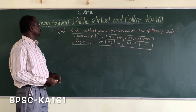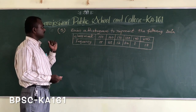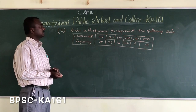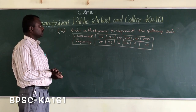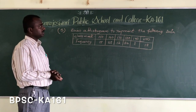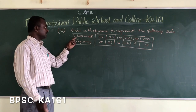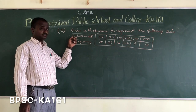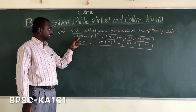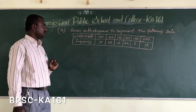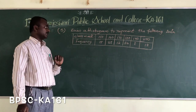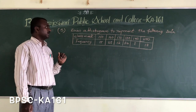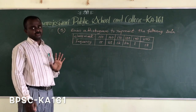So now we are going to move on to the fifth sum. This is one more type of method to construct the histogram. Draw histogram to represent the following data, but here what you observe is they are not given class interval — they are given class mark and frequency. So we have to find out what is the class interval first.